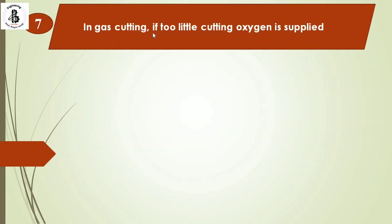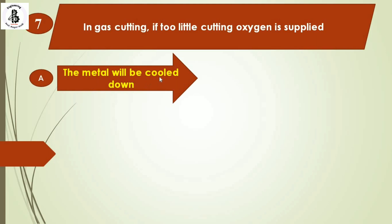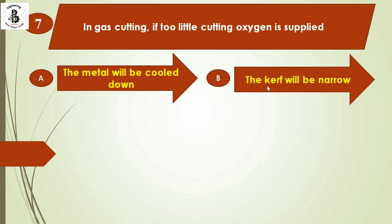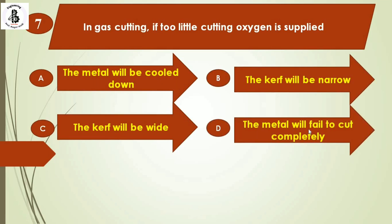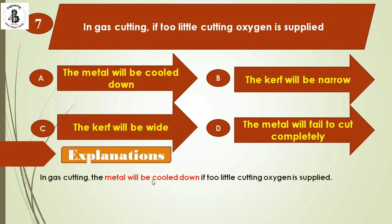The next question: in gas cutting, if too little cutting oxygen is supplied — Option A: the metal will be cooled down, Option B: the kerf will be narrow, Option C: the kerf will be wide, Option D: the metal will fail to cut completely. If too little cutting oxygen is supplied, the metal will be cooled down, as an excess amount of oxygen is required for cutting. The right answer is Option A.